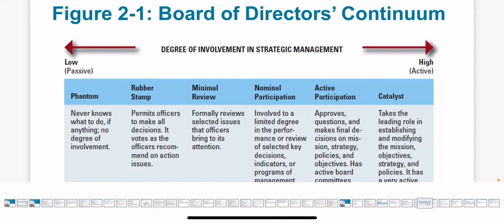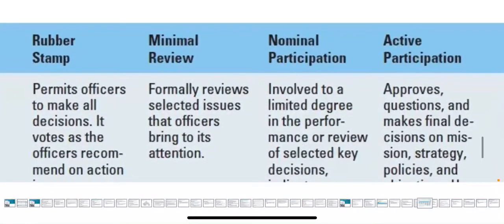In the second stage, rubber stamp, officers are allowed to behave on behalf of the board. The board of directors assigns some officers to work closely with the management. In the minimal review stage, they just review some issues which are selected by officers — if officers ask the board to review specific problems, they will look at only those.